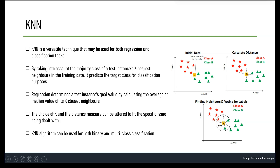One of the biggest advantages of KNN is its simplicity and ease of implementation. It is a non-parametric algorithm, which means it can handle complex decision boundaries and nonlinear relationships between input features and target variables. KNN is also called a lazy learning algorithm, meaning it can adapt to changes in the data without requiring a complete retraining of the model.